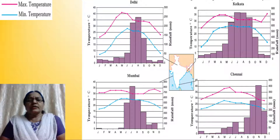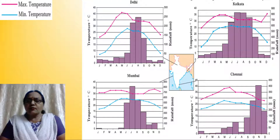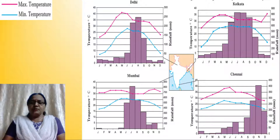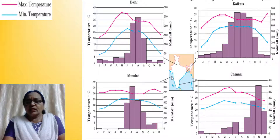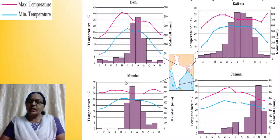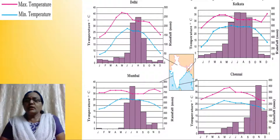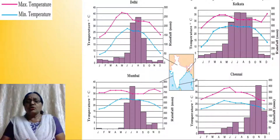Now let us come to the cities in India. Here we have the average annual range of temperature as well as rainfall in four cities of India: Delhi, Kolkata, Mumbai, and Chennai. Coastal cities — those along the coastal regions — have a milder climate, and the range in temperature will be very low. But look at the city of Delhi — there is a vast difference in the average annual range in temperature.